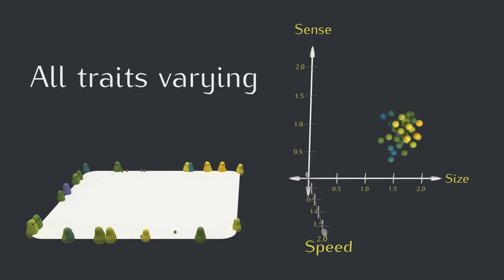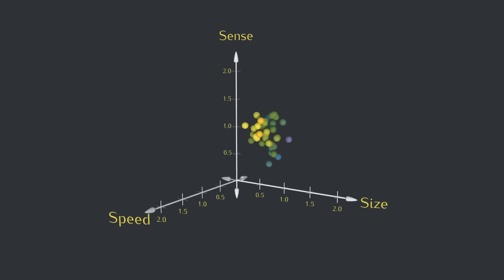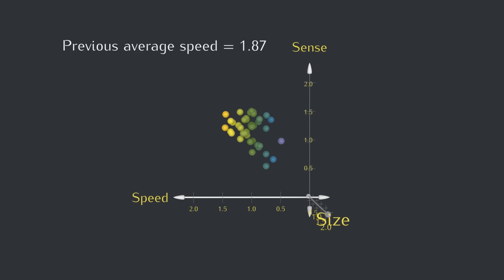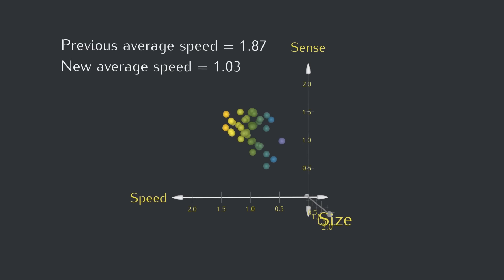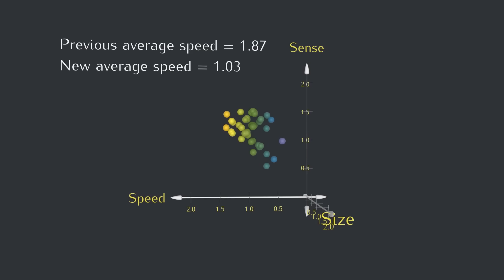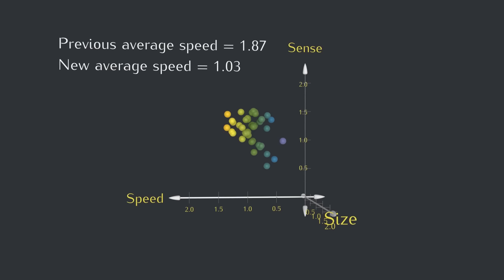So what can we say about the results? The first thing I notice is that the average speed is significantly different from what it was when only speed was allowed to vary, which is a little bit surprising because we didn't explicitly change anything about how speed works. But with sense and size able to vary, different creatures were able to appear. A creature's environment includes all the creatures around it, and for whatever reason, speed just wasn't as valuable this time around.